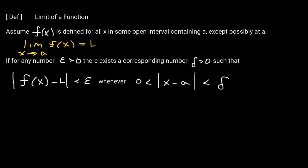This is the precise definition for the limit of a function. Assume that a function is defined for all x in some open interval containing a, except possibly at a. Remember, in order for the limit of a function as x approaches a to exist, we do not necessarily need the function to be defined at a. This means the limit of our function as x approaches a is equal to some real number L.